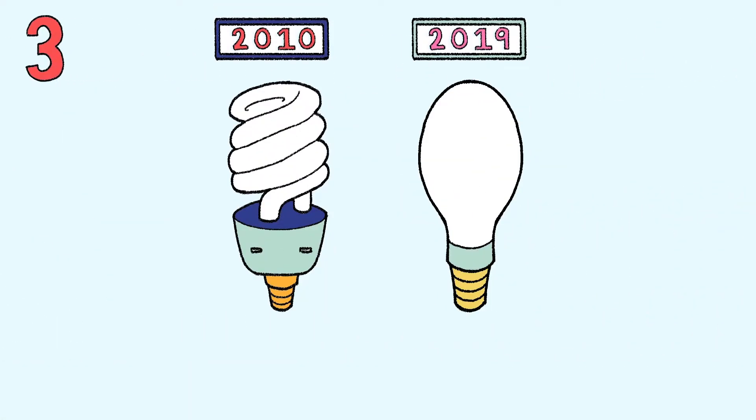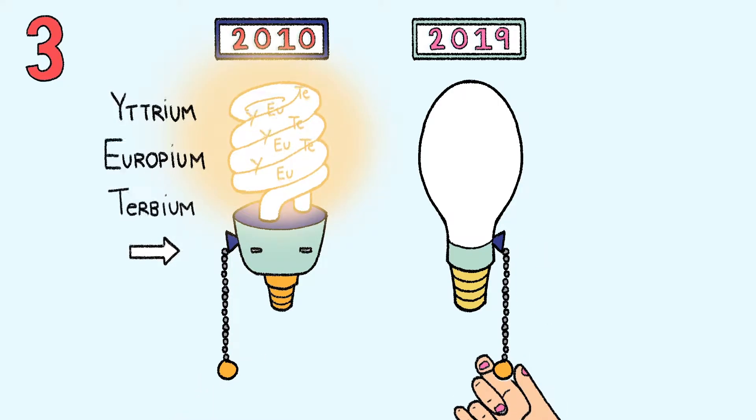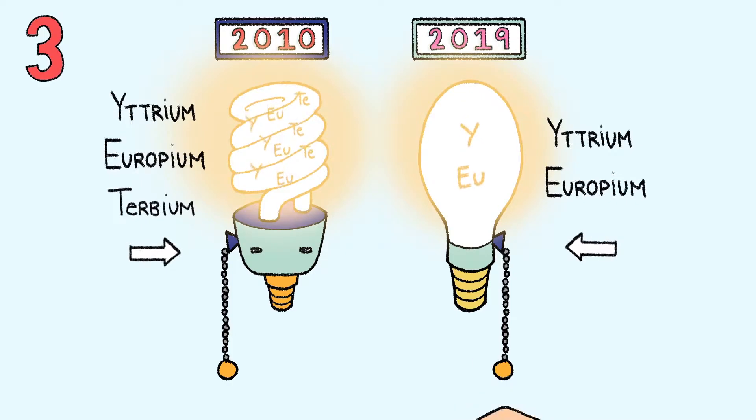A decade ago, half of all yttrium, europium, and terbium production went into compact fluorescent bulbs. Today's LEDs still use yttrium and europium, but a lot less to produce the same amount of light.